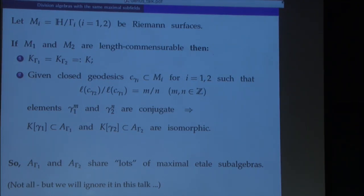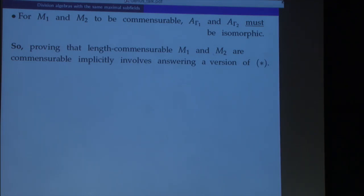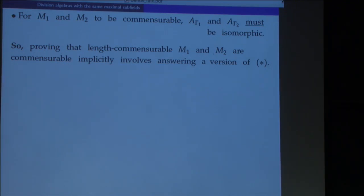For results like finiteness, it's enough to look at only those subalgebras that intersect a given arithmetic dense subgroup, but I will not get into these technical details. In any case, these algebras share lots of common étale subalgebras. On the other hand, our Riemann surfaces M1 and M2 can be commensurable only if the algebras are the same. So whenever you want to prove that length-commensurable Riemann surfaces M1 and M2 are in fact commensurable, you are explicitly answering the question I stated: given that our quaternion algebras have lots of common étale subalgebras, we need to show that these algebras are the same.